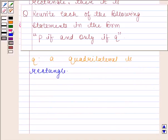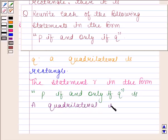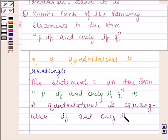So the statement in the form P if and only if Q is: a quadrilateral is equiangular if and only if it is a rectangle.